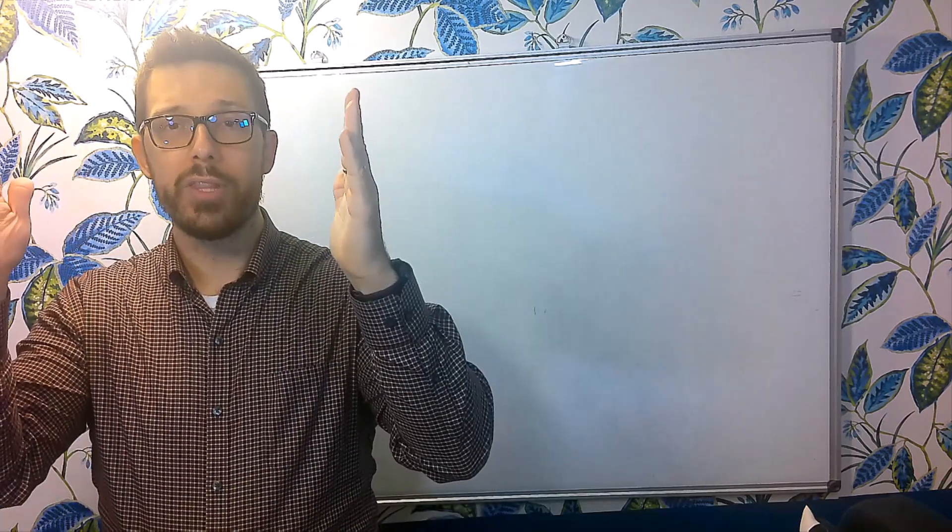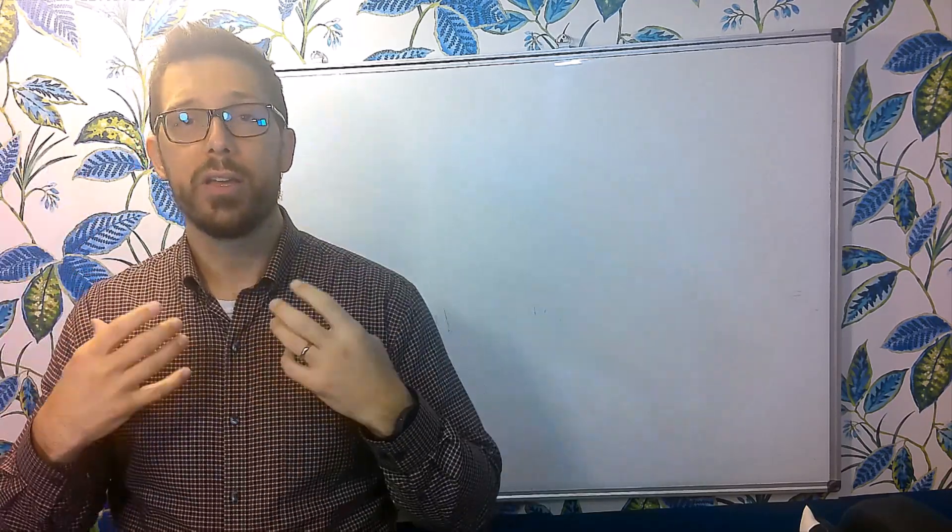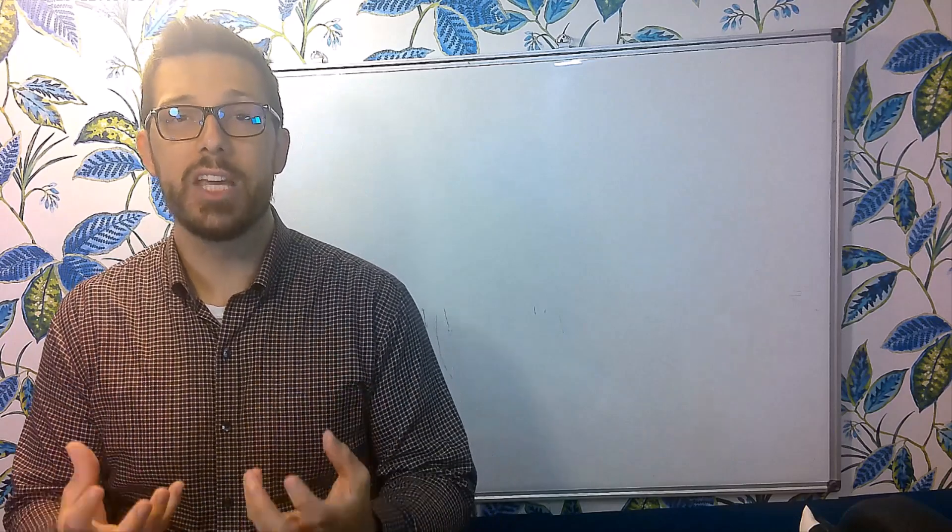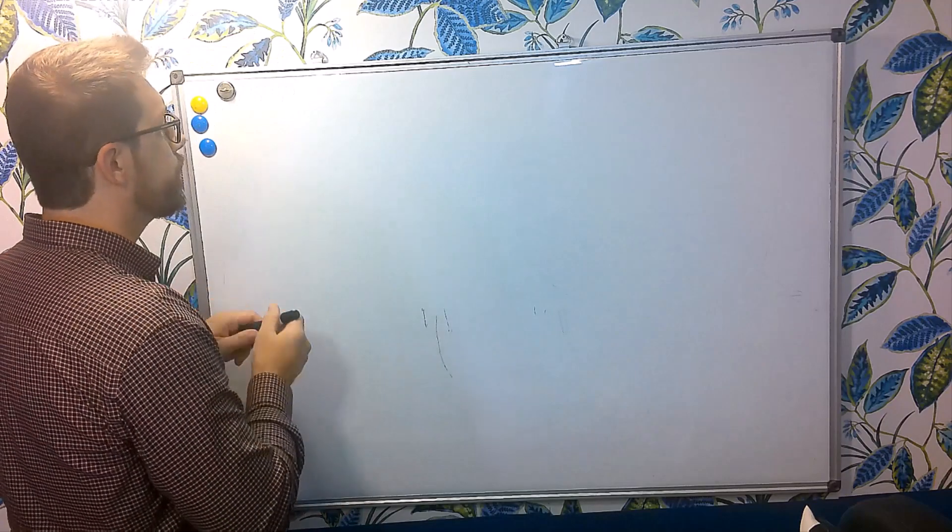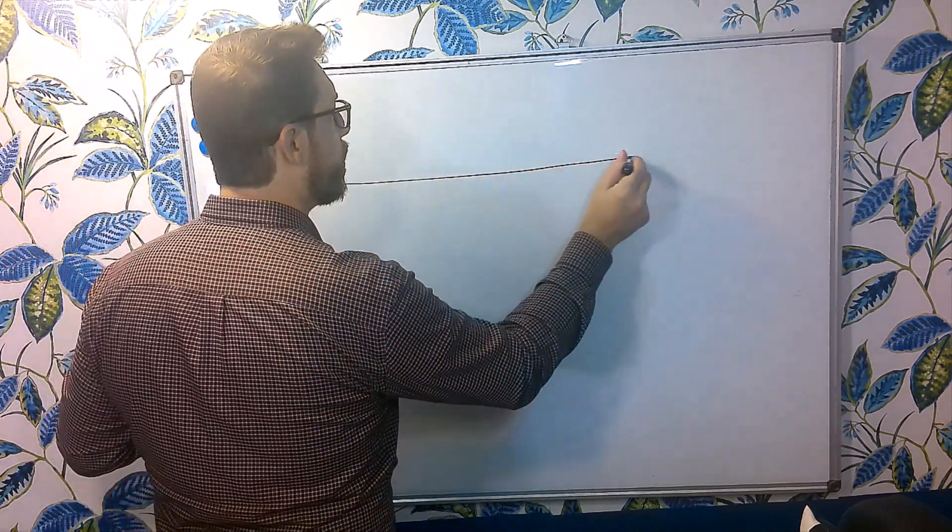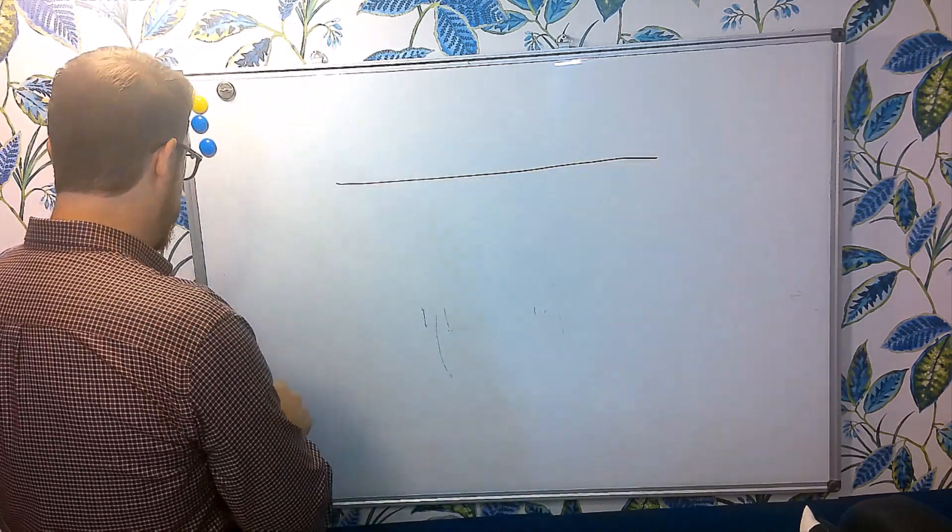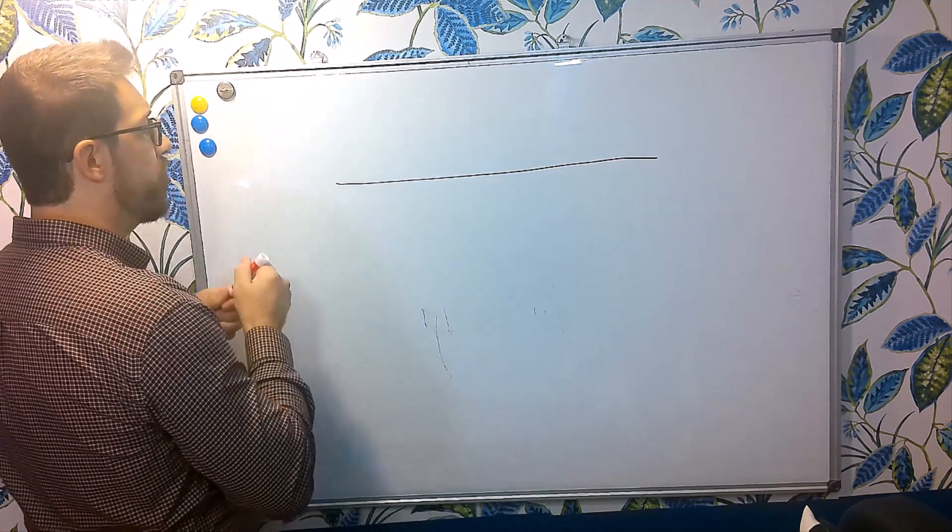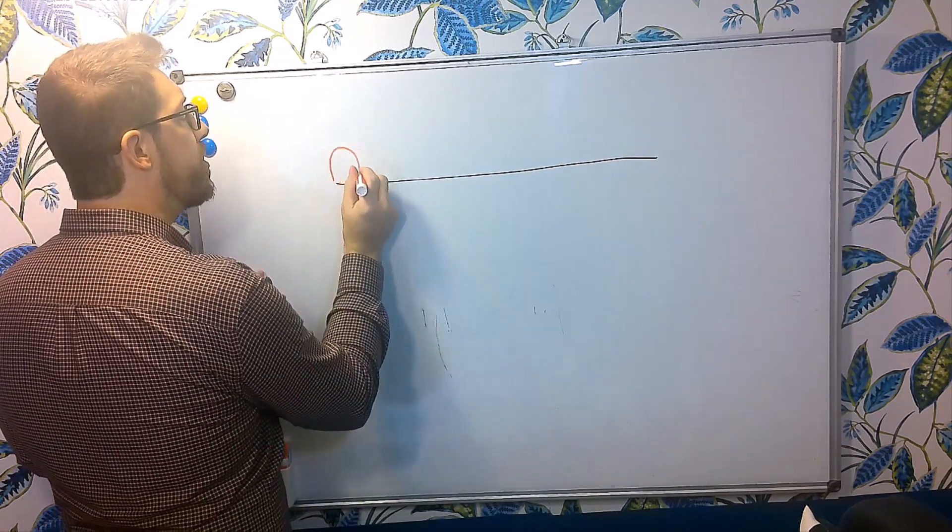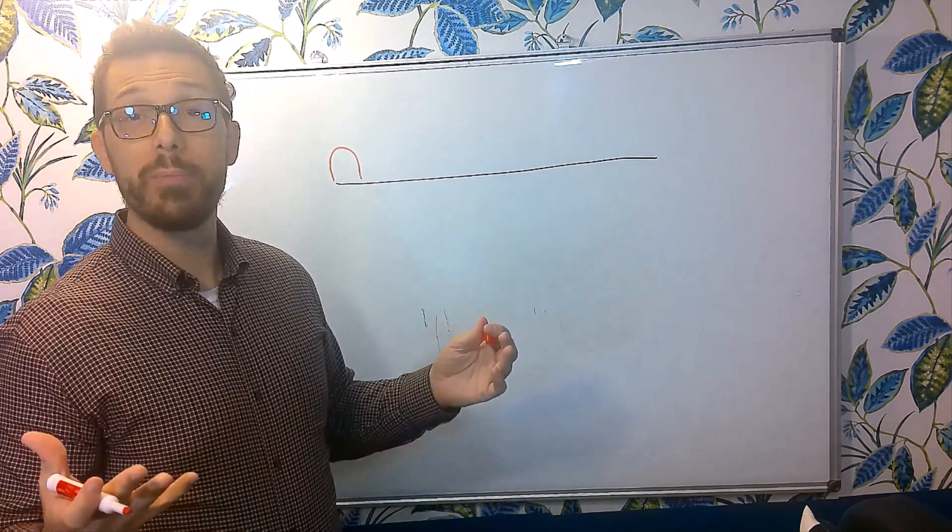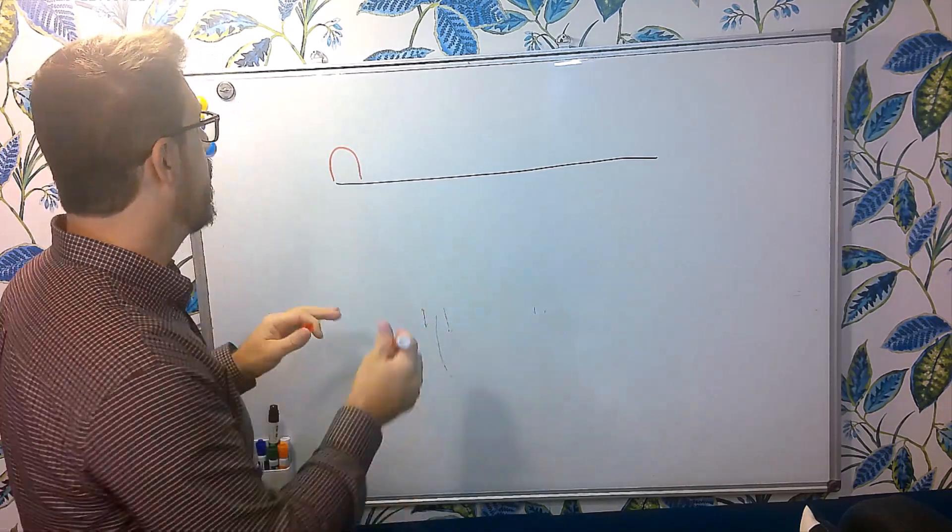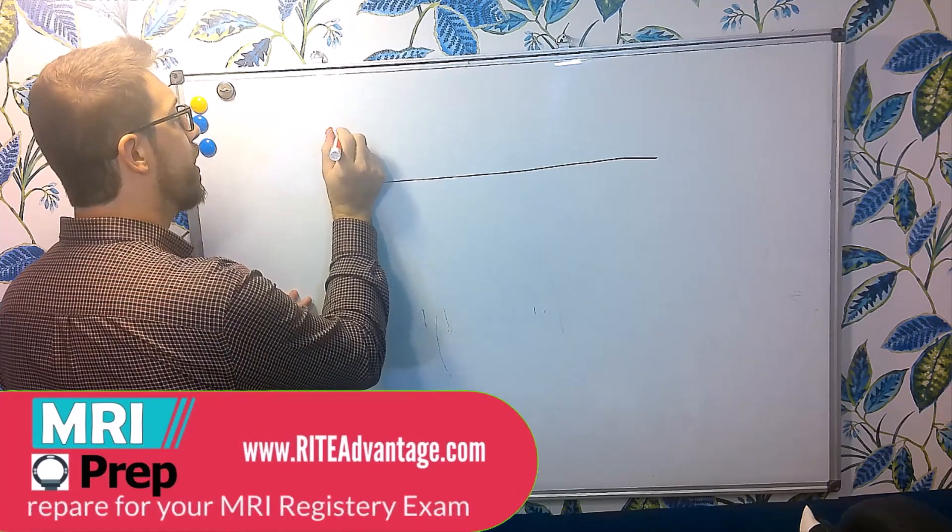So we have this TR, the beginning of our TR is the excitation pulse. We're delivering energy to our patient. If I were to draw this, I would say we deliver an RF pulse to our patient. Now this RF pulse is typically a 90 degree RF pulse, but it can be 90 degrees or less. But let's just call it a 90 degree RF pulse.